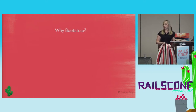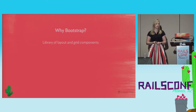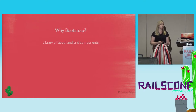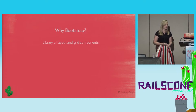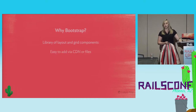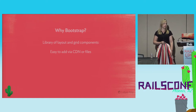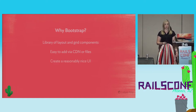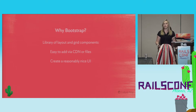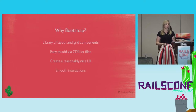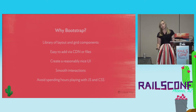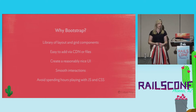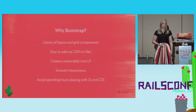And looking at Bootstrap — at this time Twitter had just released version 2. It was a whole library of layout and grid components, so suddenly column layouts were available to the masses. It was easy to add — drop it in from the CDN or put the file into the vendor folder in Rails. Like many startups, we really just wanted a reasonably nice UI, some smooth interactions for our users, and to get something to market quickly. These were back-end engineers primarily.